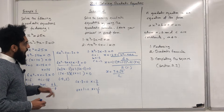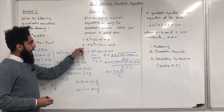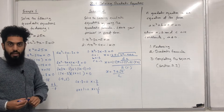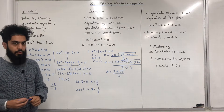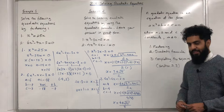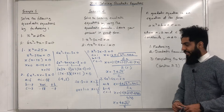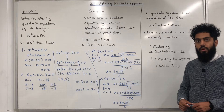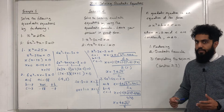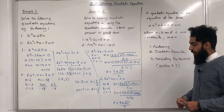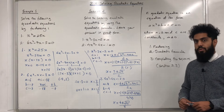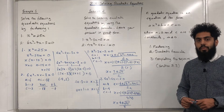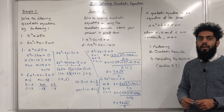I would like you all to try the second question yourself. Once you're done, the answer will come up on the board. You should all have X = (4 ± √32) / 8. The first solution is X = (4 + √32) / 8 and the second solution is X = (4 - √32) / 8.